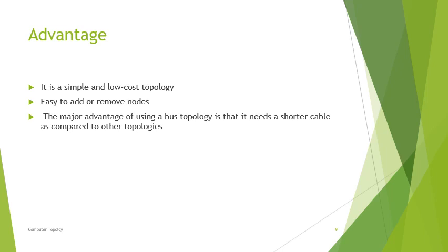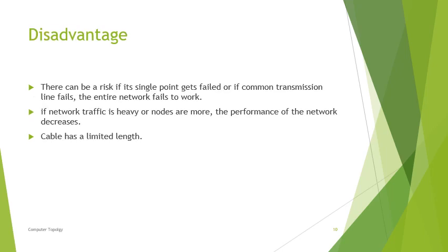Advantages of bus topology: it is simple and low-cost, easy to add or remove nodes, and needs shorter cable compared to other topologies. Disadvantages: if the common transmission line fails, the entire network may fail. If traffic is heavy or the number of nodes is high, network performance degrades, and there is a limit on cable length.